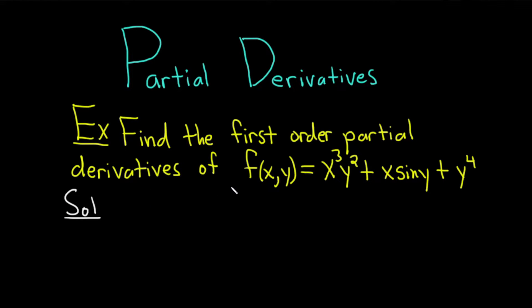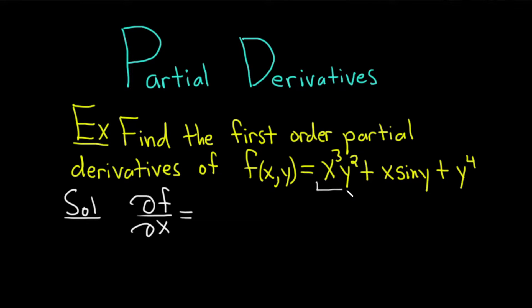Let's start by finding the partial derivative of f with respect to x — that's written ∂f/∂x, the notation we use. In general, when finding partials with respect to a variable, you treat all of the other variables as constants. So here, pretend that all the y's are constants. Looking at the first term x³y², the y² is basically a constant — it just hangs out — and we differentiate x using the power rule. We bring down the 3 and subtract one from the exponent, giving us x². The y² just hangs out.